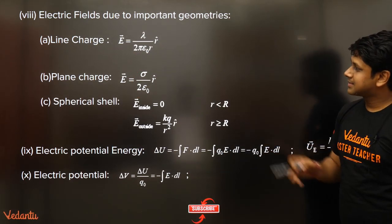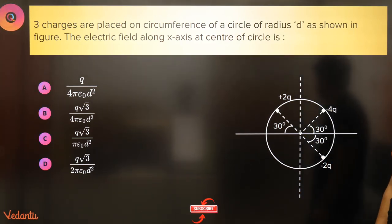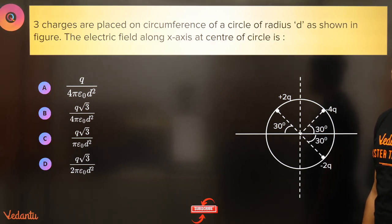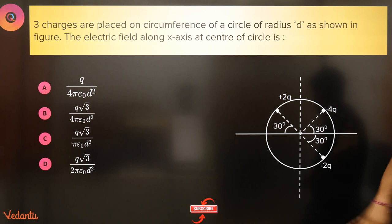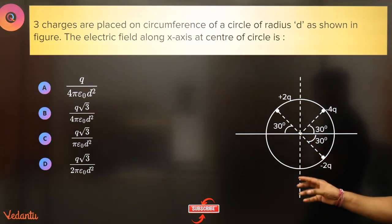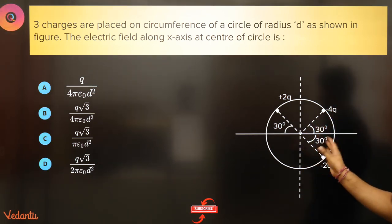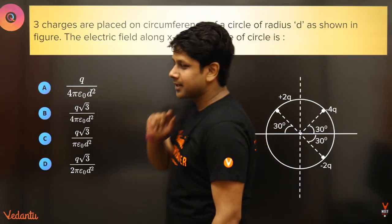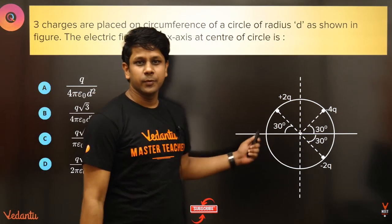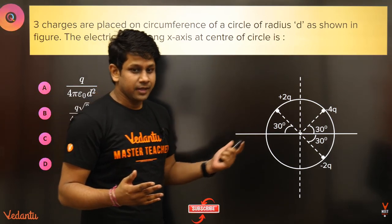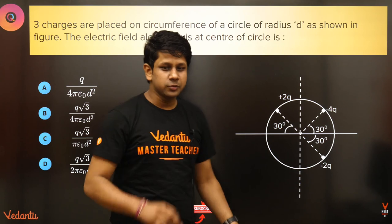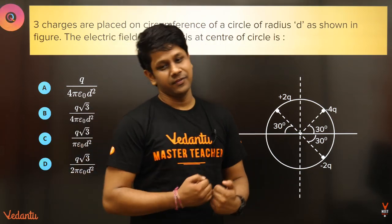Let's start with a question. A nice question — as usual I will try this and then we will move ahead. I will tell you the formulae; you should remember them. If you know the formulae, you will be asked to apply them. The question says: three charges are placed on the circumference of a circle. There is a circle. Here is a charge +2Q, here is a charge −4Q, and here is a charge −2Q. You are asked for the electric field at the center of the circle.